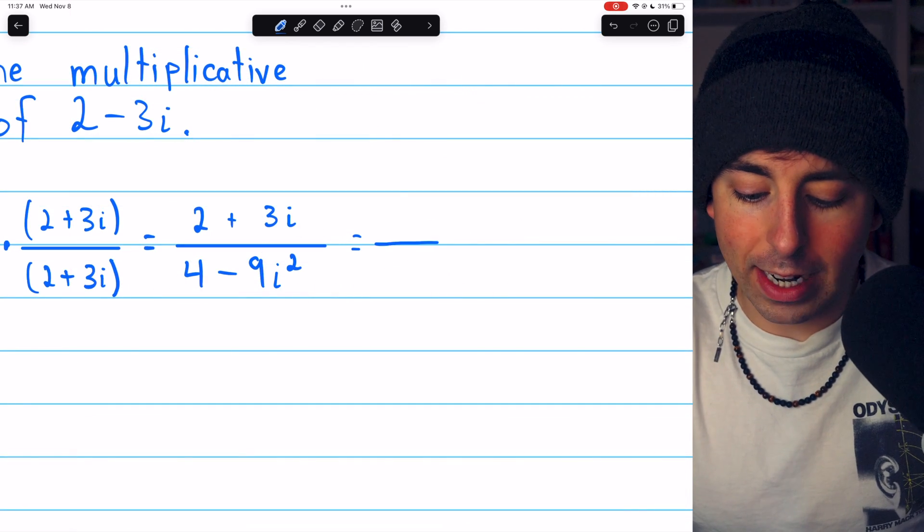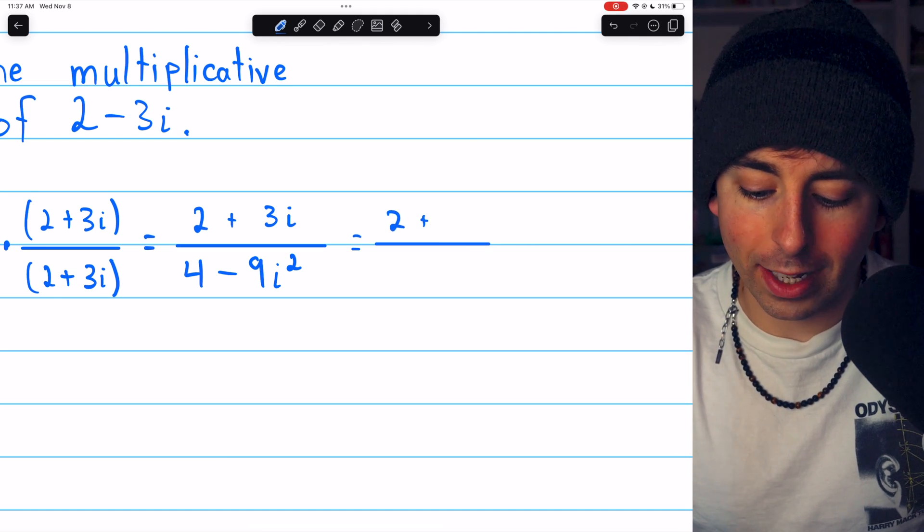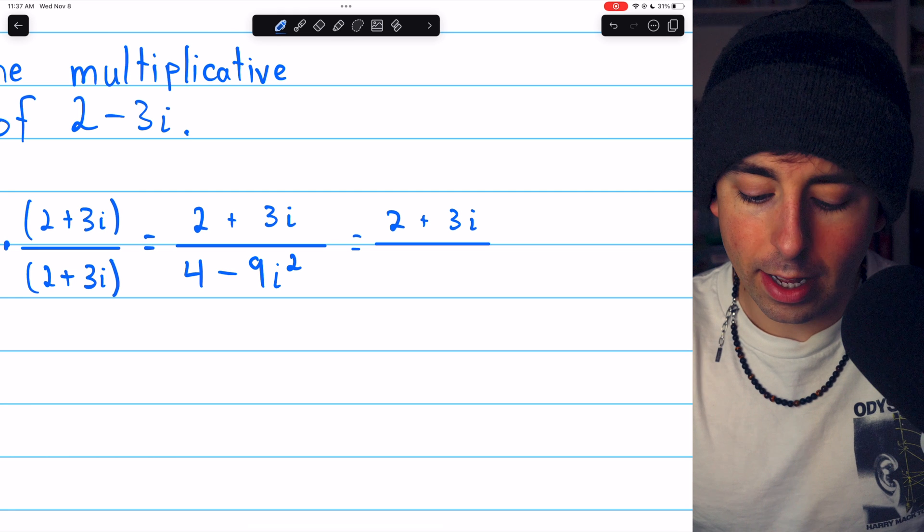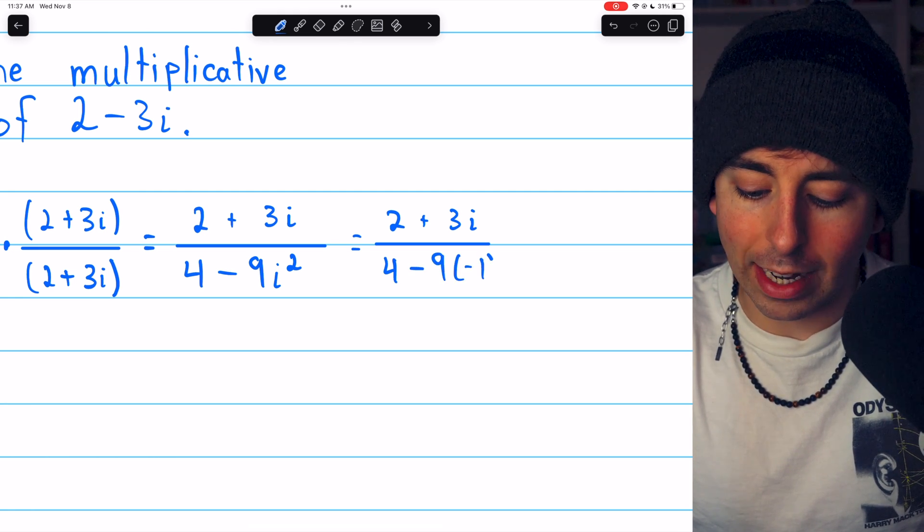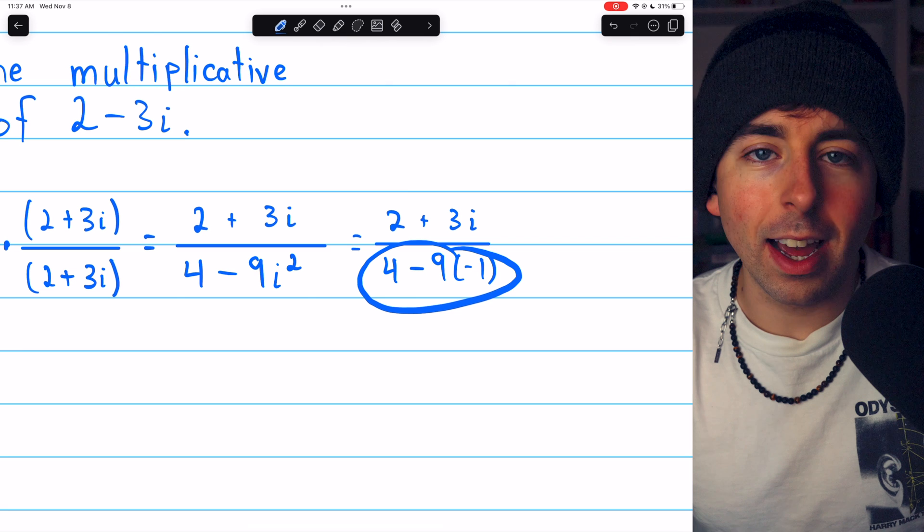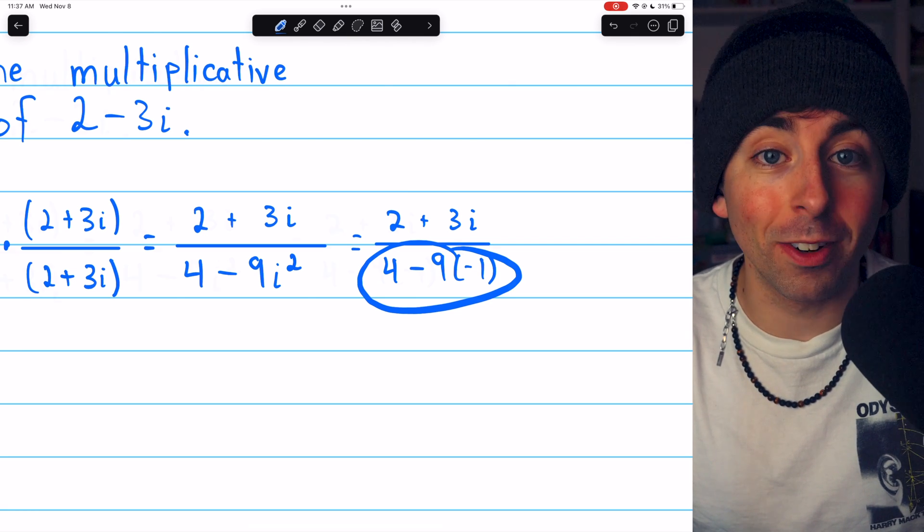But then i squared in the denominator, well, by definition of the imaginary unit i, i squared is negative 1. So this is 4 minus 9 times negative 1. 4 minus 9 times negative 1 is 4 minus negative 9, which is 4 plus 9, so 13.